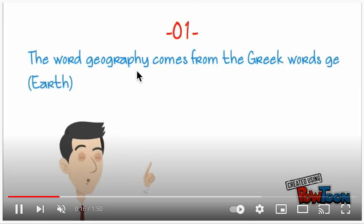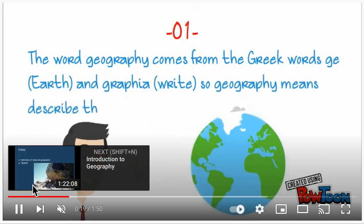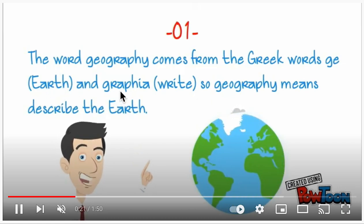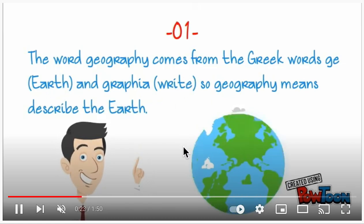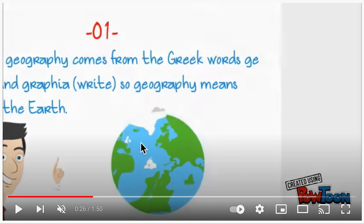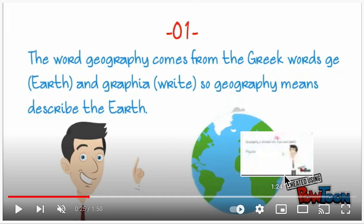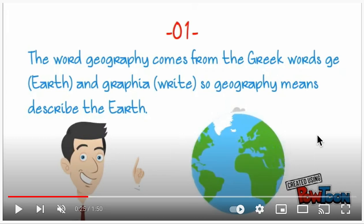The word geography comes from the Greek words 'geo,' which means earth, and 'graphia,' which means write. So geography means describe the earth. When we're thinking about geography, we are describing the earth — what do we notice as part of our planet.